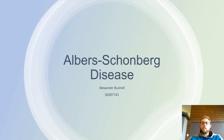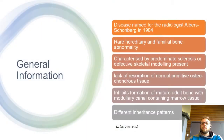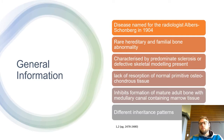Albert Schönberg's disease is named for the radiologist Albert Schönberg. It was first described in 1904. It is quite rare and it is a hereditary familial bone abnormality, characterized by predominant sclerosis of the affected skeleton.